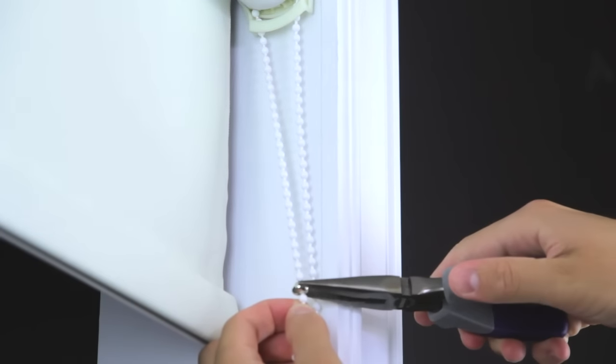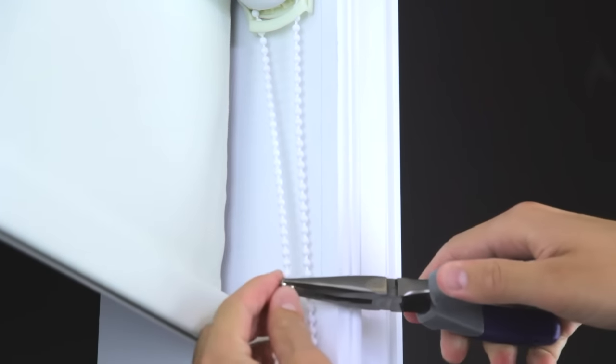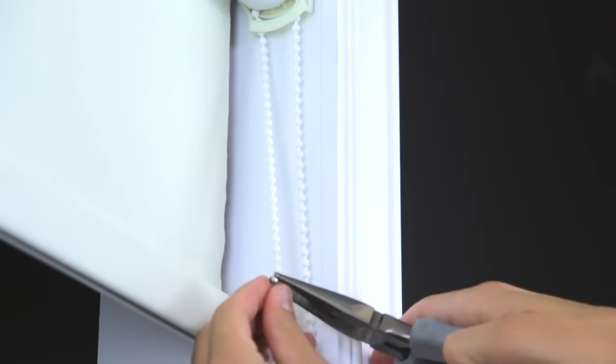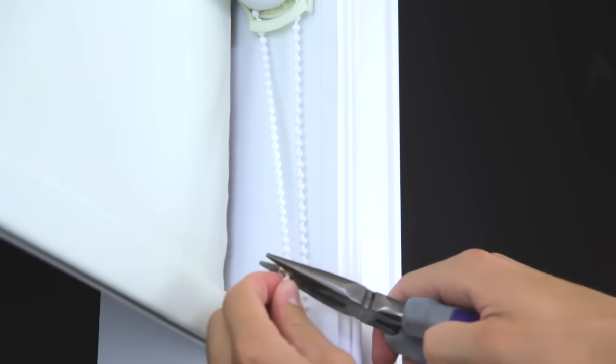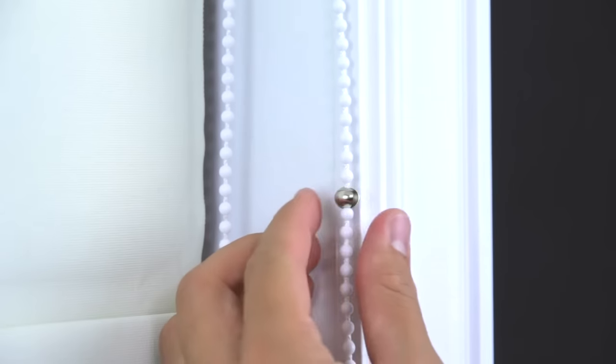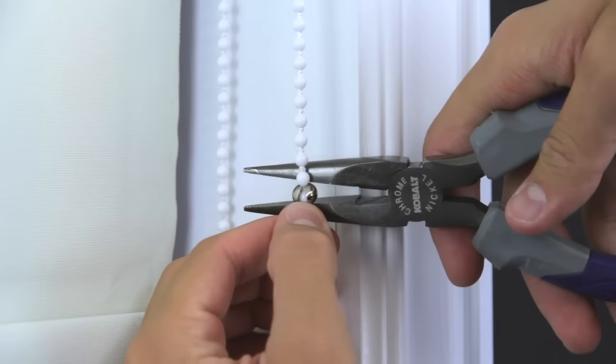If your shade has metal stop balls or crimps, follow the same technique used for the plastic stop balls, but use needle nose pliers to crimp the stops onto the chain. To remove a metal crimp, use the needle nose pliers to open it up as shown.